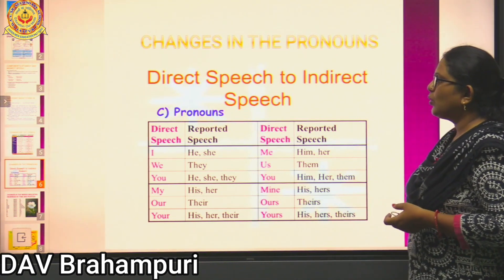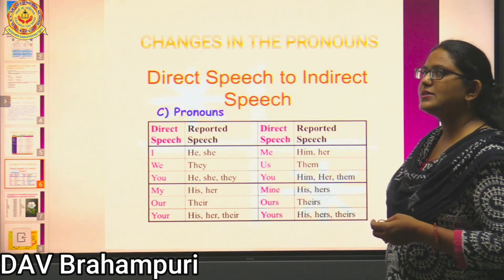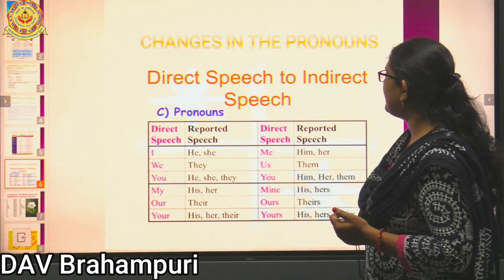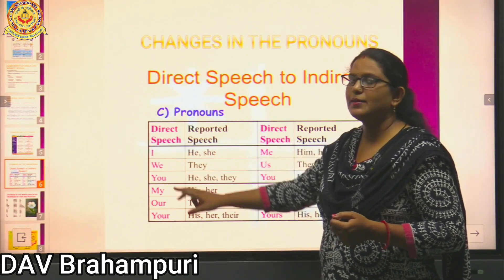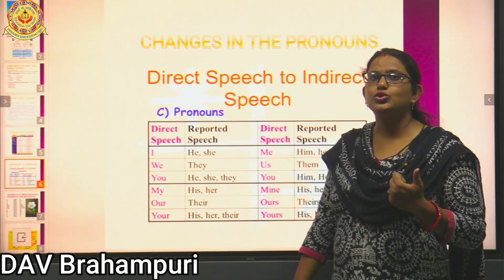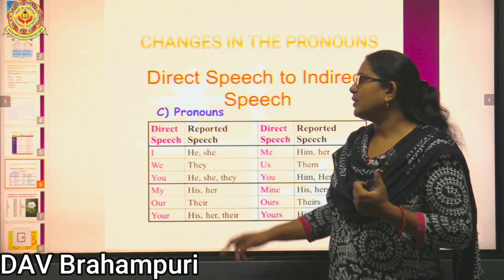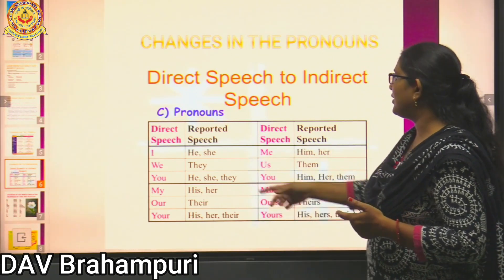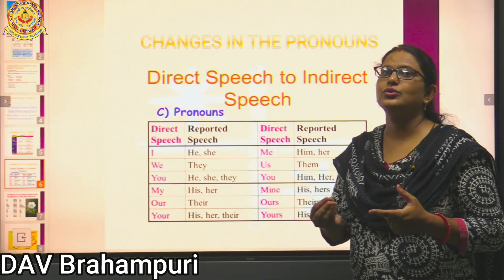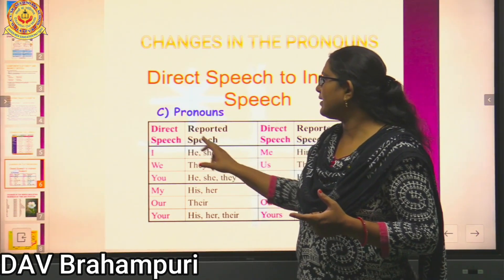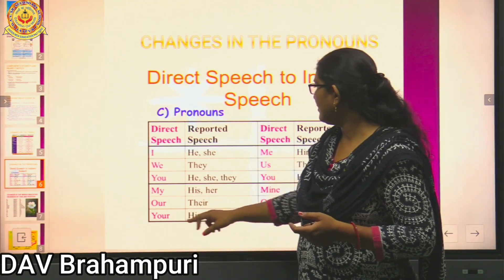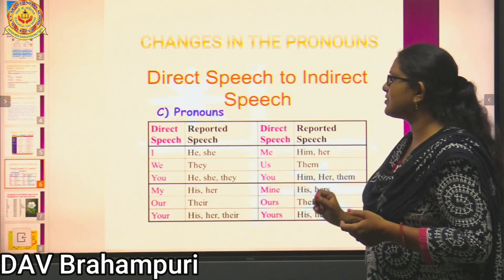These are the changes in pronouns when converting from direct to indirect speech. For example, if 'I' is in the direct speech — 'she said, I go to the morning walk' — it changes to: 'she said that she goes to the morning walk,' because the 'I' refers to her. If 'we' is in the direct speech, it changes to 'they.' Similarly, all pronouns undergo corresponding changes.